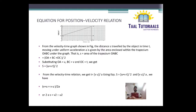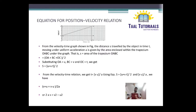This was the third equation of motion. We have three equations: first is V is equal to U plus AT, second is S is equal to UT plus half AT square, and third is 2AS is equal to V square minus U square.